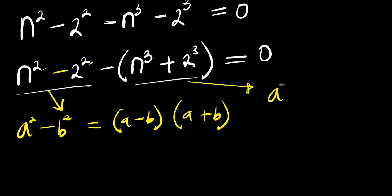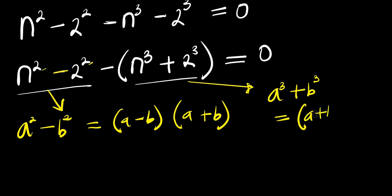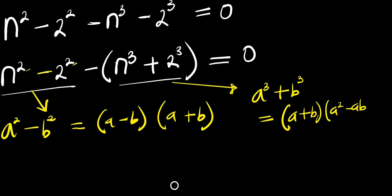For a³ + b³, this is (a + b)(a² - ab + b²).